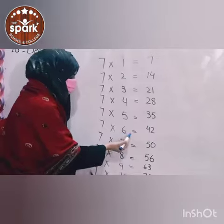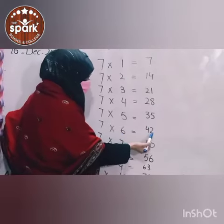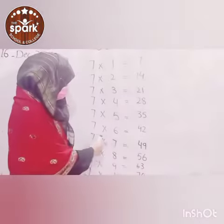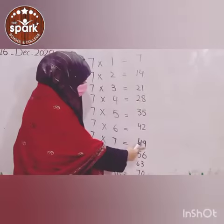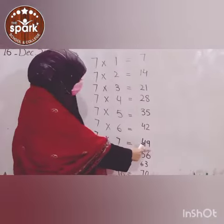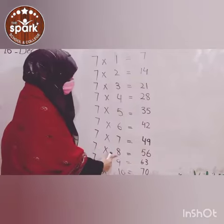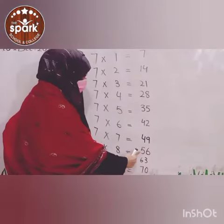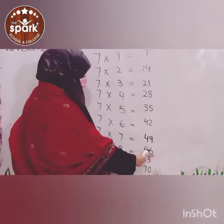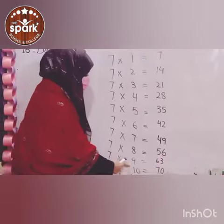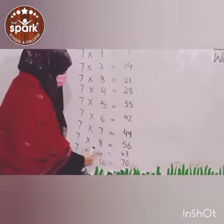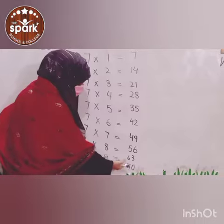7 sixes are 42. Okay, 7 sevens are 49. 7 sevens are 49. 7 eights are 56. 7 eights are 56. 7 nines are 63. 7 nines are 63.